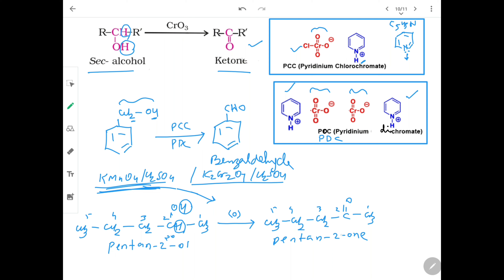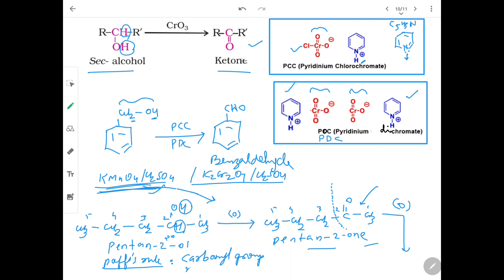Secondary alcohol on oxidation gives ketone — we have seen this before. But if ketone is oxidized with the same strong oxidizing agent in excess, there is breaking of the carbon-carbon bond — between carbon 2 and carbon 3, not between carbon 1 and carbon 2. The rule for this is called Popoff's rule. Popoff's rule says: in the oxidation of an unsymmetrical compound — where both sides have different carbons — the carbonyl group (C=O) remains with the smaller alkyl group, because it is more stable.